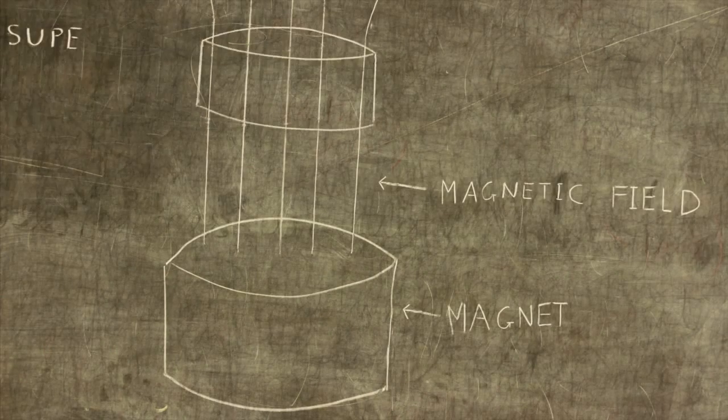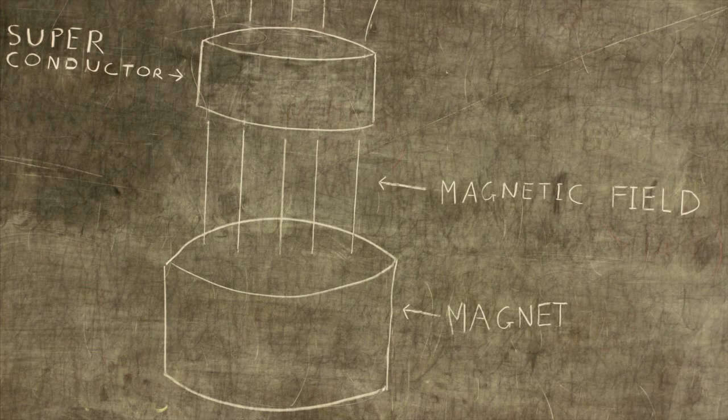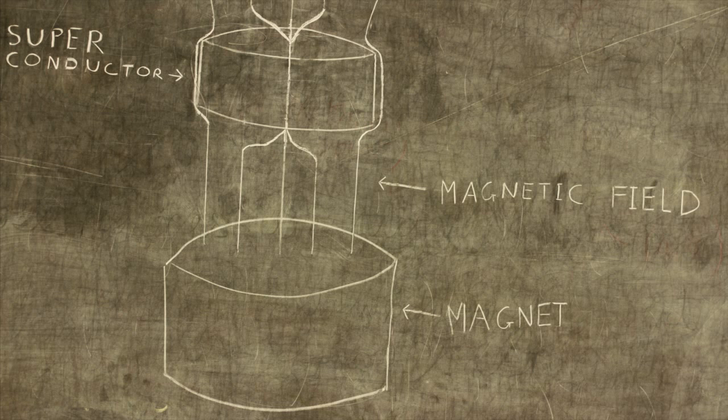When a superconductor is placed into the magnetic field above a magnet, it expels all the magnetic fields from within itself, except for weak points where the magnetic field lines are locked inside.